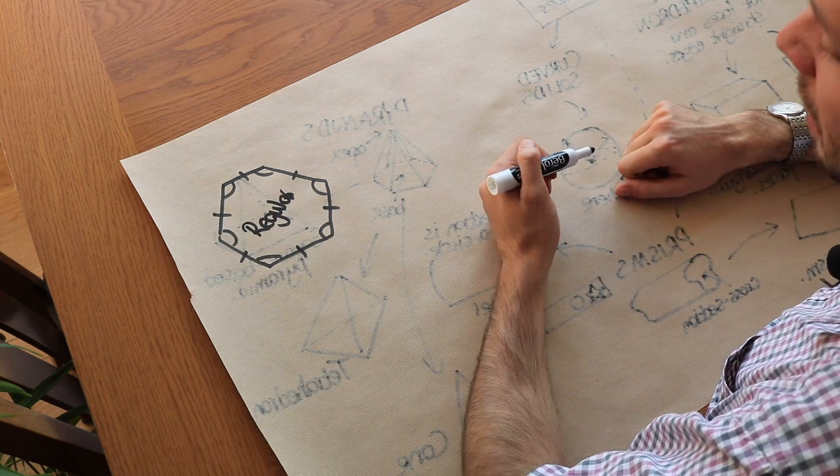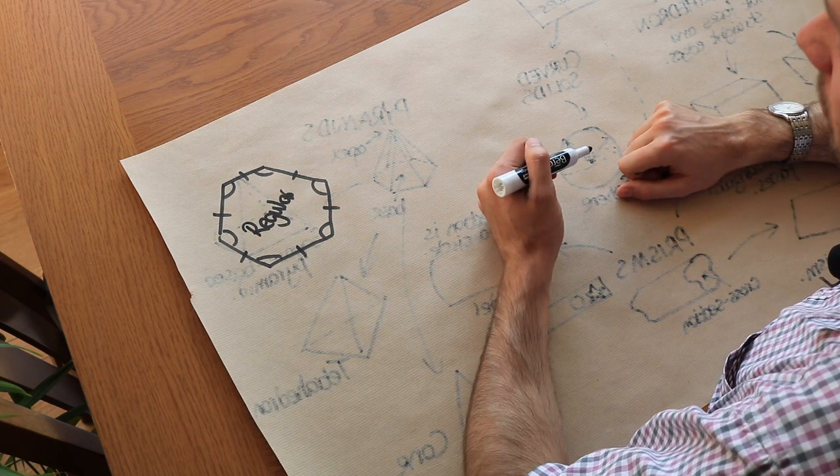And those marks on the angles mean all those angles are the same. So that would be a regular hexagon. So you might wonder if there's a 3D version. Can you have a regular polyhedron? And the answer is yes.